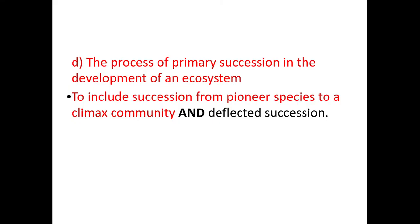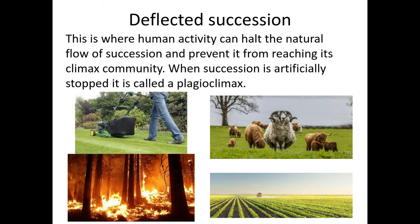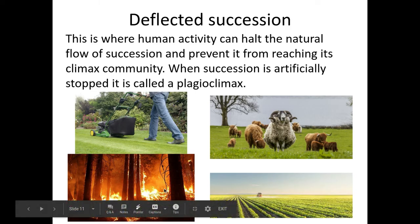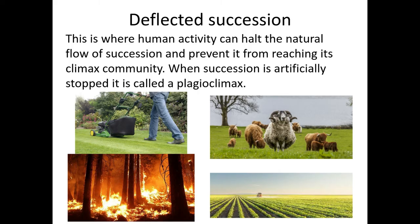The last part is deflected succession. Deflected succession is where human activity can halt the natural flow of succession and prevent it from reaching its climax community. When succession is artificially stopped, this is called a plagioclimax. Examples include mowing the lawn, a forest fire, grazing of sheep, or clearing shrubbery for growing crops — in each of these, the climax community is prevented from being reached.